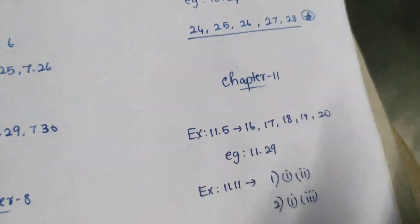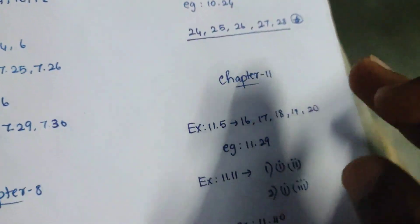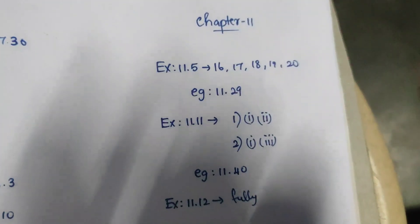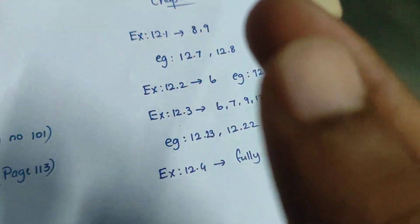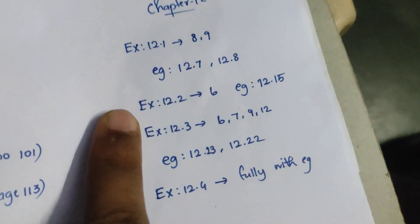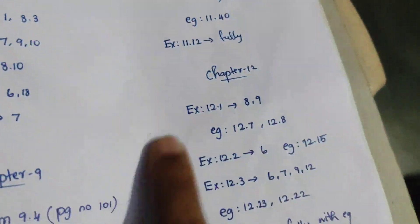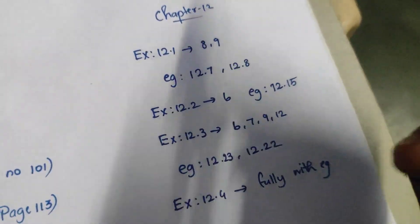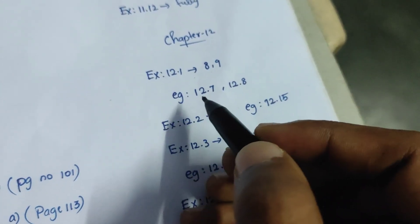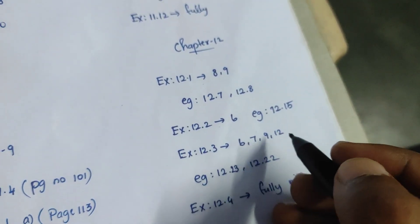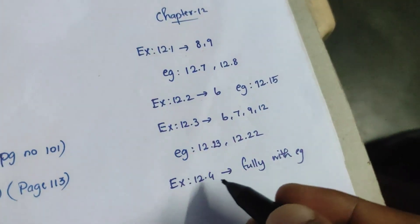Example 1.40. Example 12.40. Example 12.45. Example 12.13. This is the 12th chapter. Exercise 12.1: 89. 12.7 is 12.8. Exercise 12.2: 6, 12.15. Exercise 12.3: 67, 9, 12. 12.23, 12.22. Exercise 12.4 is fully confirmed.